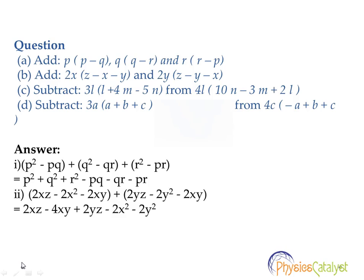Let's solve the first expression: p(p-q), q(q-r), and r(r-p). First, we multiply each term. p(p-q) = p²-pq, q(q-r) = q²-qr, r(r-p) = r²-pr.